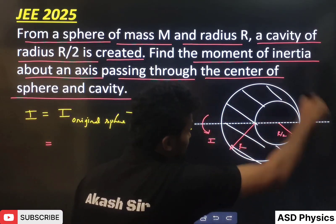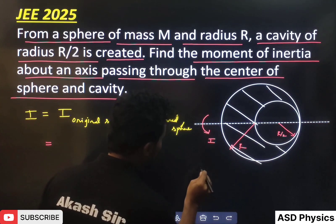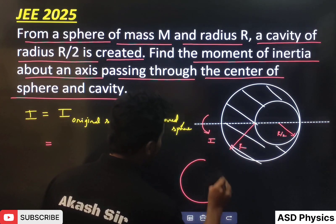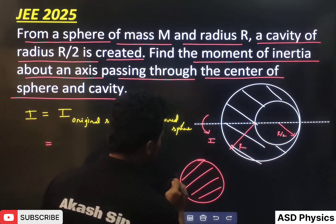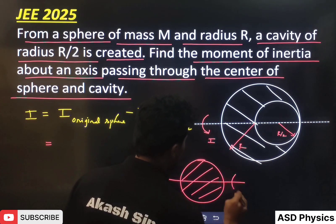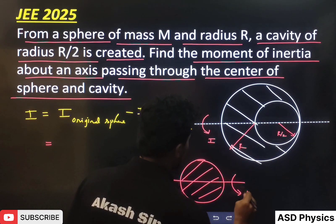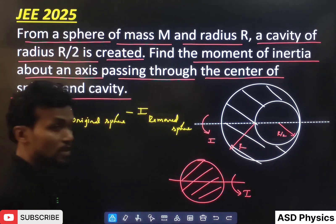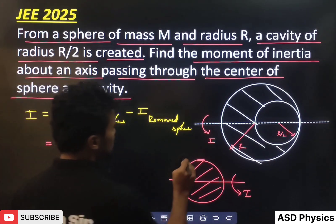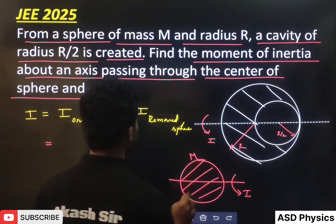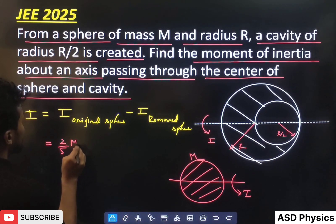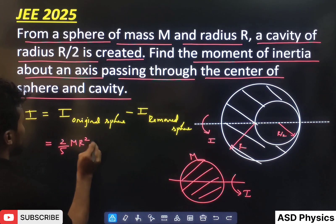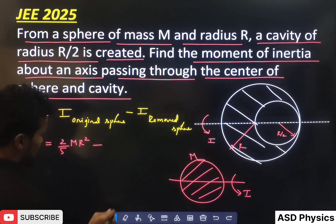For the original, if there is a complete sphere with mass M and radius R, and we are rotating about this axis, then you know very well the formula is 2/5 MR² — minus the removed sphere term.